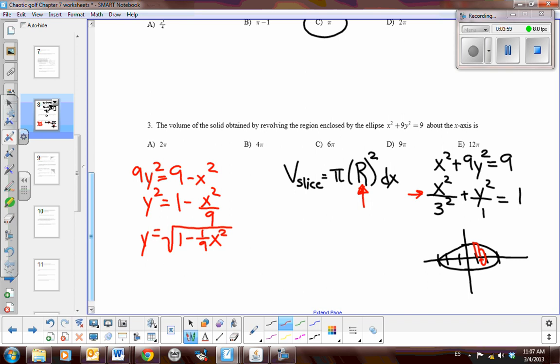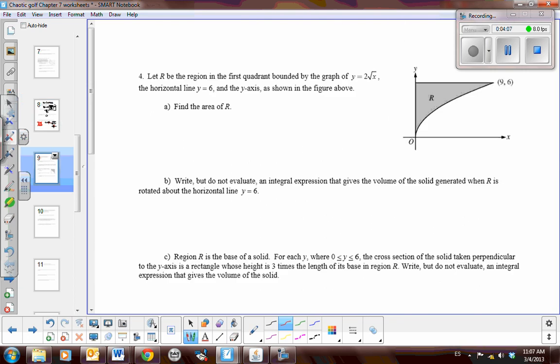Make sure you show the setup and the work, and then I'll let you know the answer in class. So moving on to problem number four, they give us the diagram, which is nice, but let's label this diagram. We know that this is the y equals 6 function, and we know that this is y equals 2 radical x, and then we've got the ordered pair 9, 6.